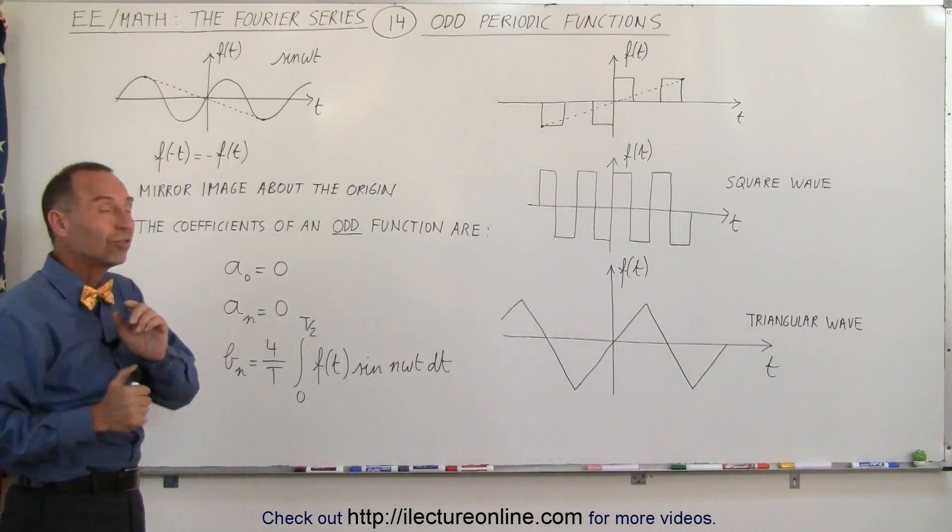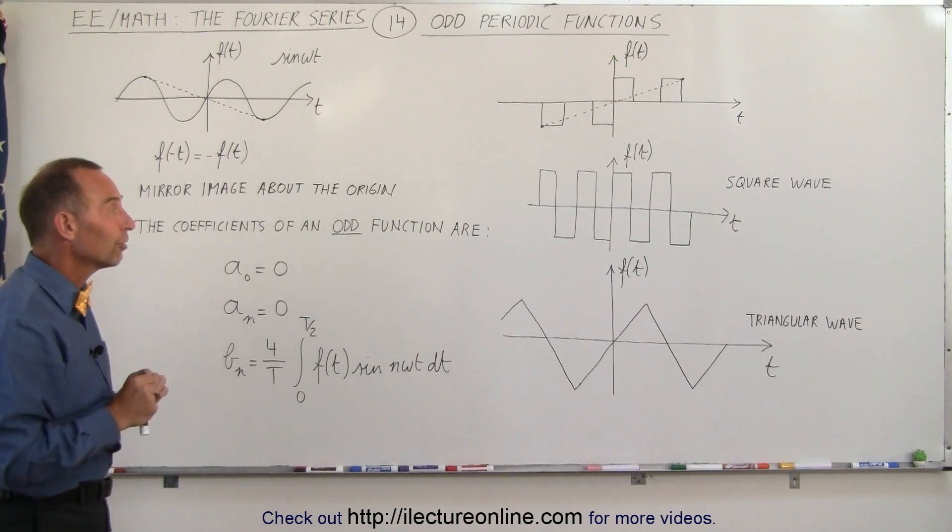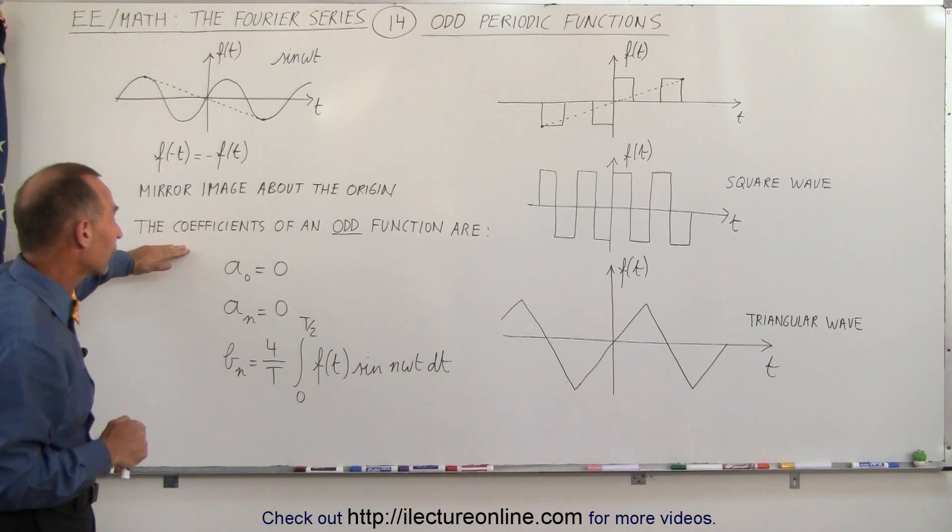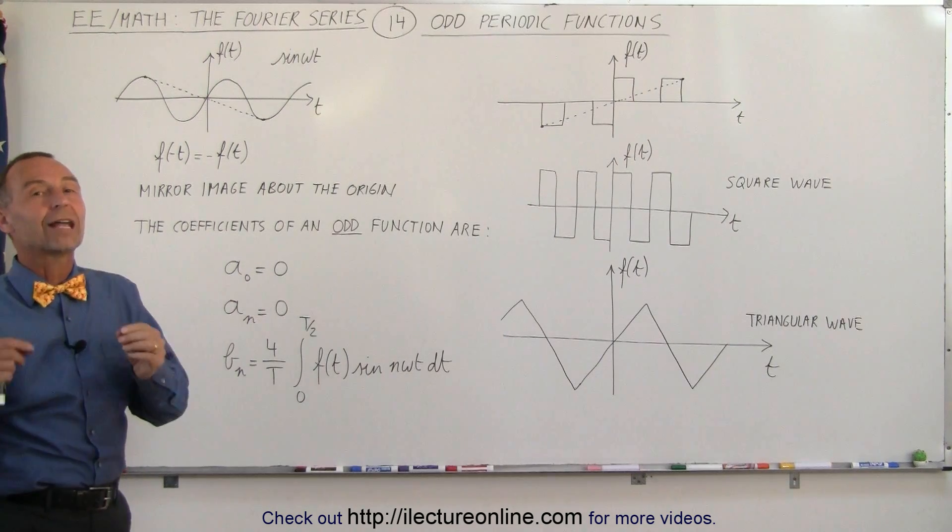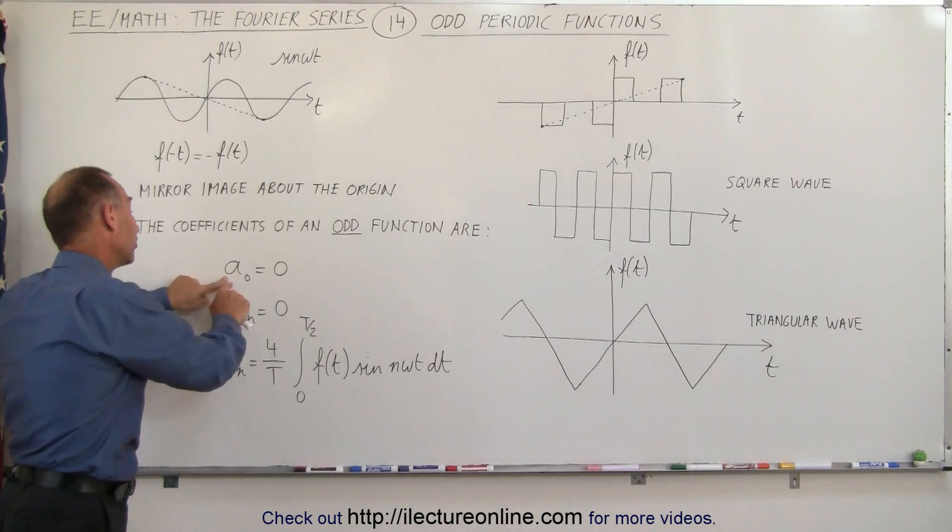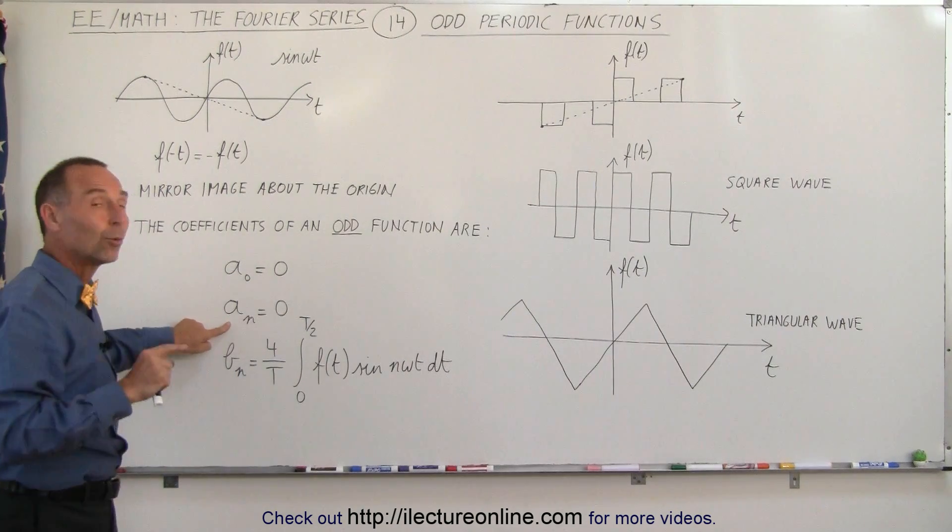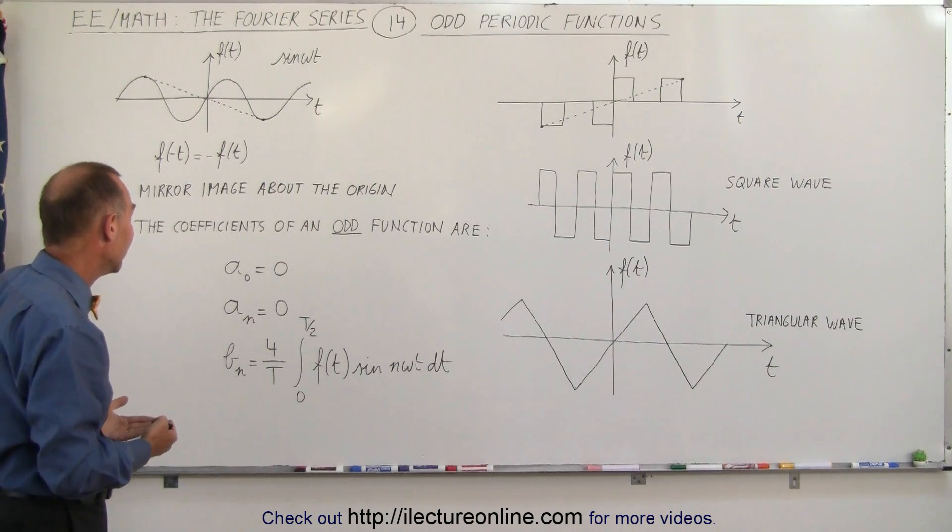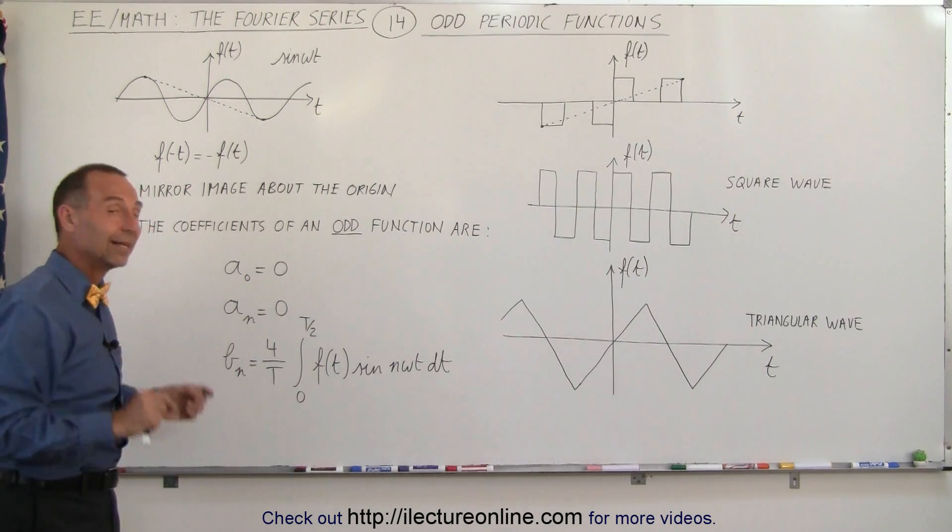What that means though is when there are odd periodic functions and you're trying to find the coefficients of the odd function, your job is all of a sudden a lot easier because it turns out if it's an odd periodic function the a_0 are always equal to zero and so are the a_n's, and the only coefficients you're supposed to find then is only the b_n's.